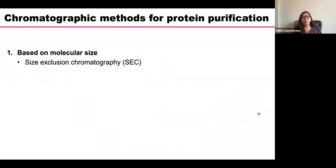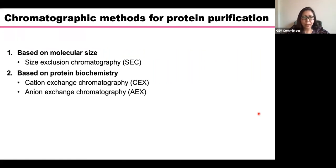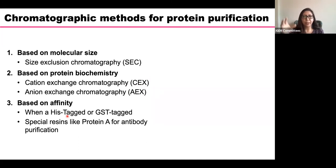I will introduce the three most well-known methods for purification using chromatography. The first is based on molecular size — this is why it's important to know how big your protein is — and it's called size exclusion chromatography. The second is based on protein chemistry, specifically the net charge of your protein, whether it's positive or negative. The third is affinity chromatography, which takes into account tags that have been engineered into the construct, allowing purification by affinity.